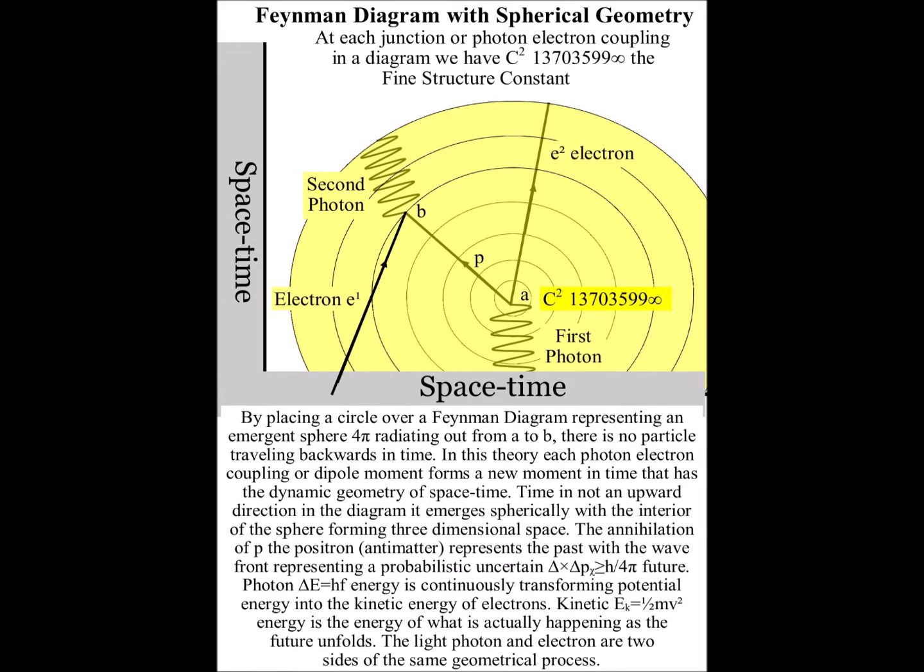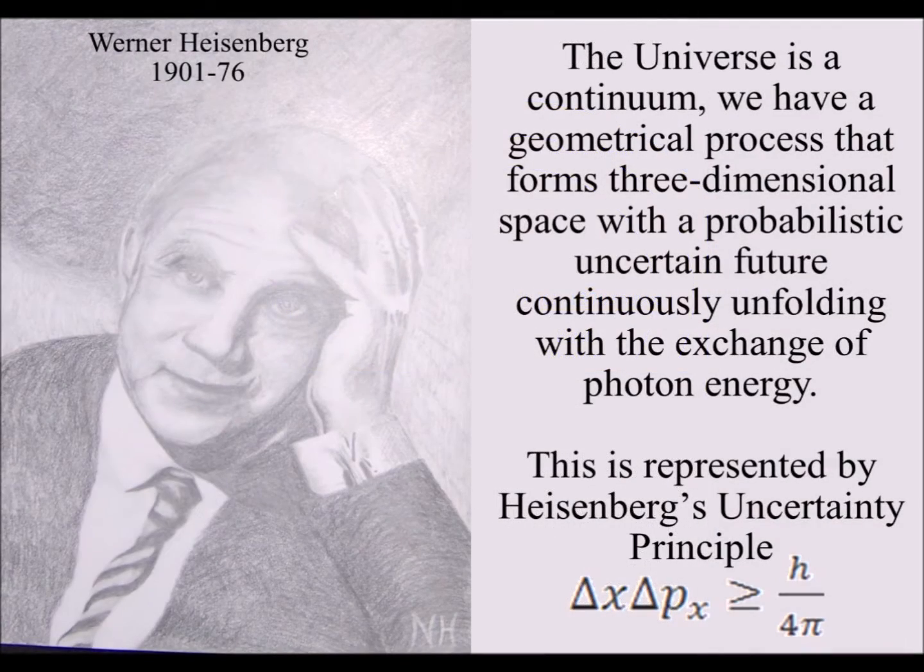It emerges spherically, with the interior of the sphere forming three-dimensional space. The annihilation of antimatter represents the past, with the wavefront representing a probabilistic, uncertain future.